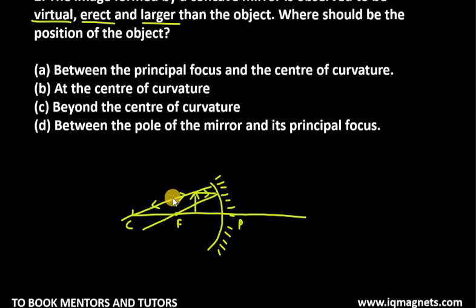We have to place the object between P and F, to the right-hand side. Where we get this image, there is our image. This is my A' and B', and this is my A' and B'.